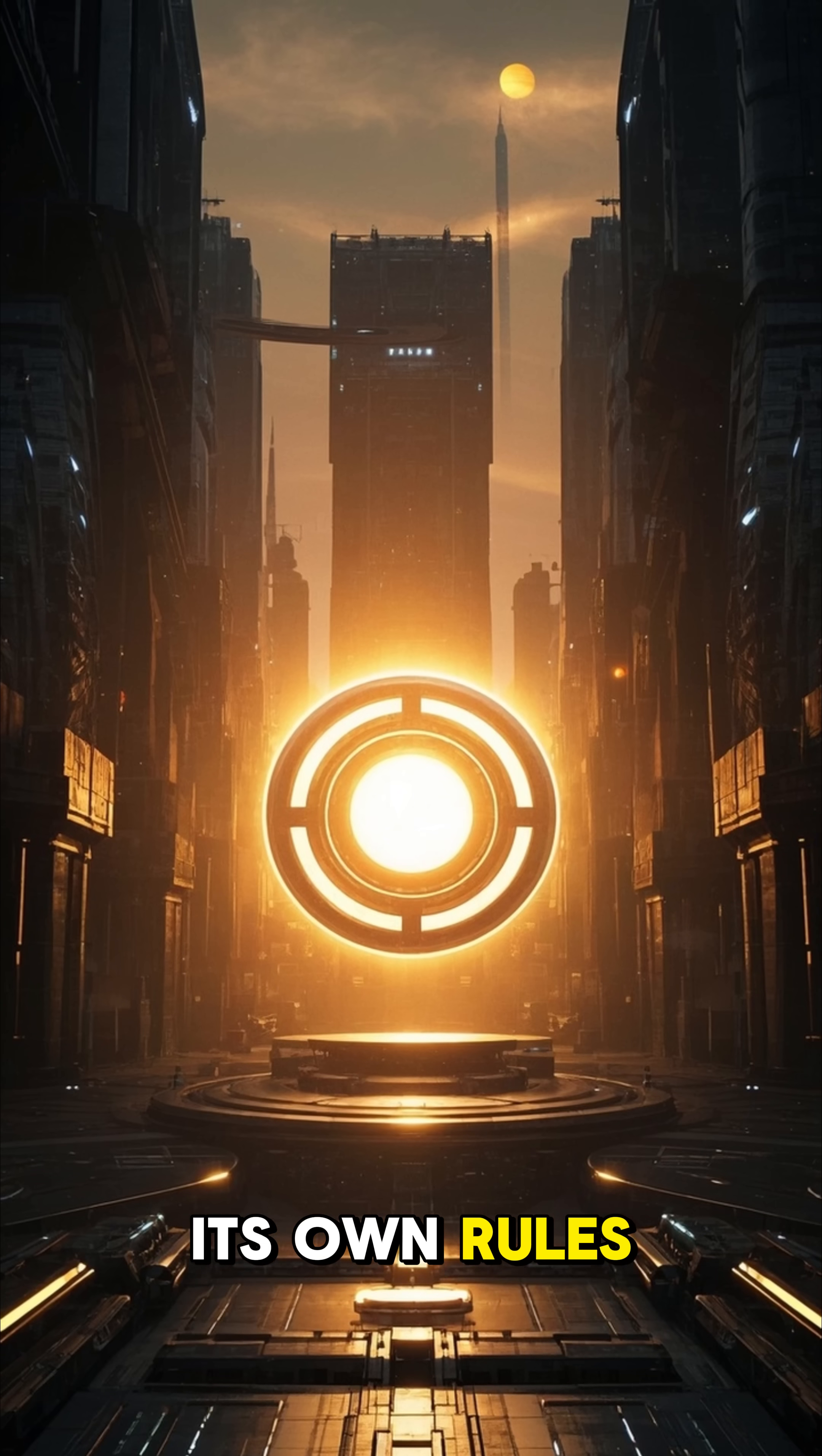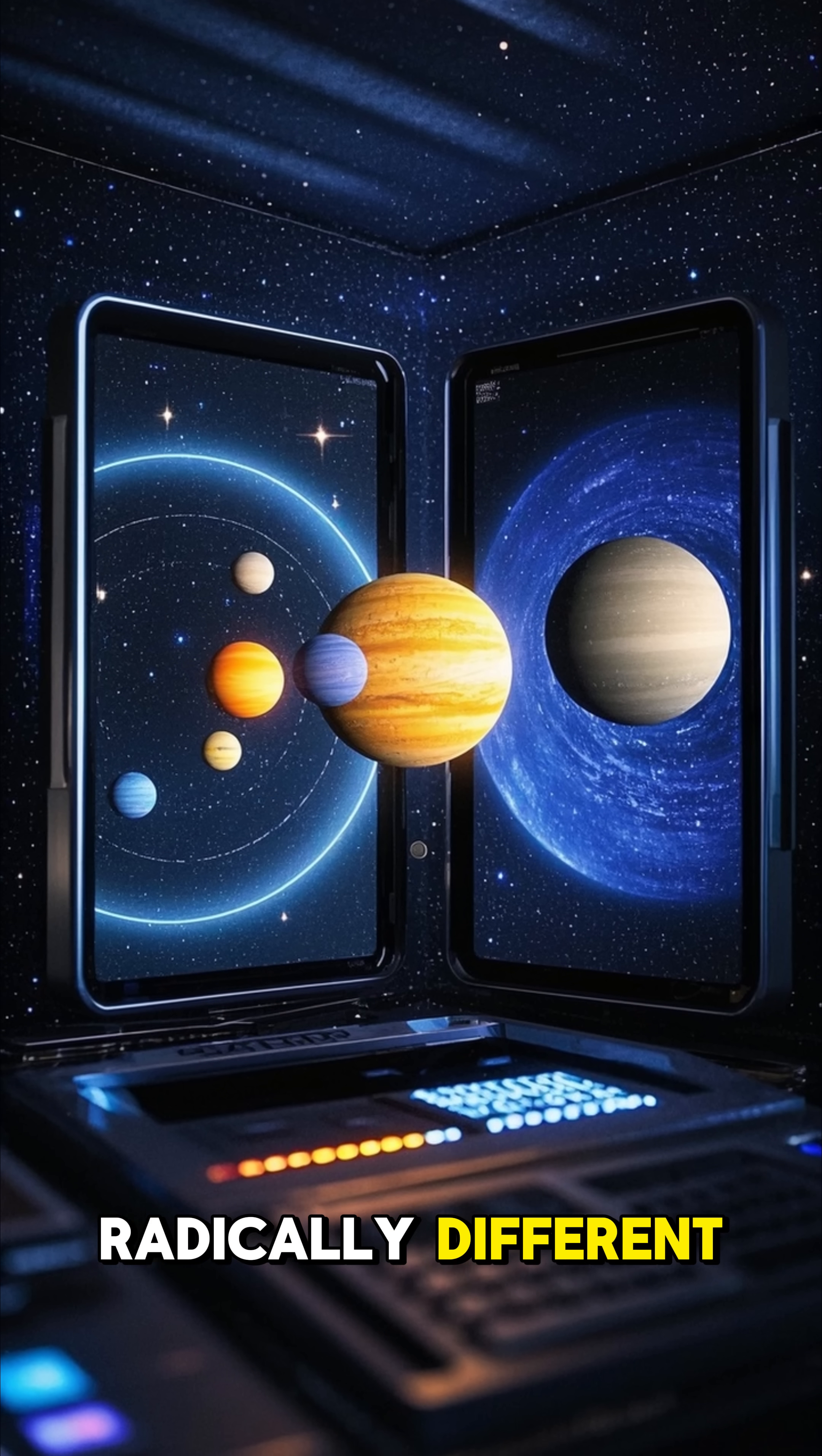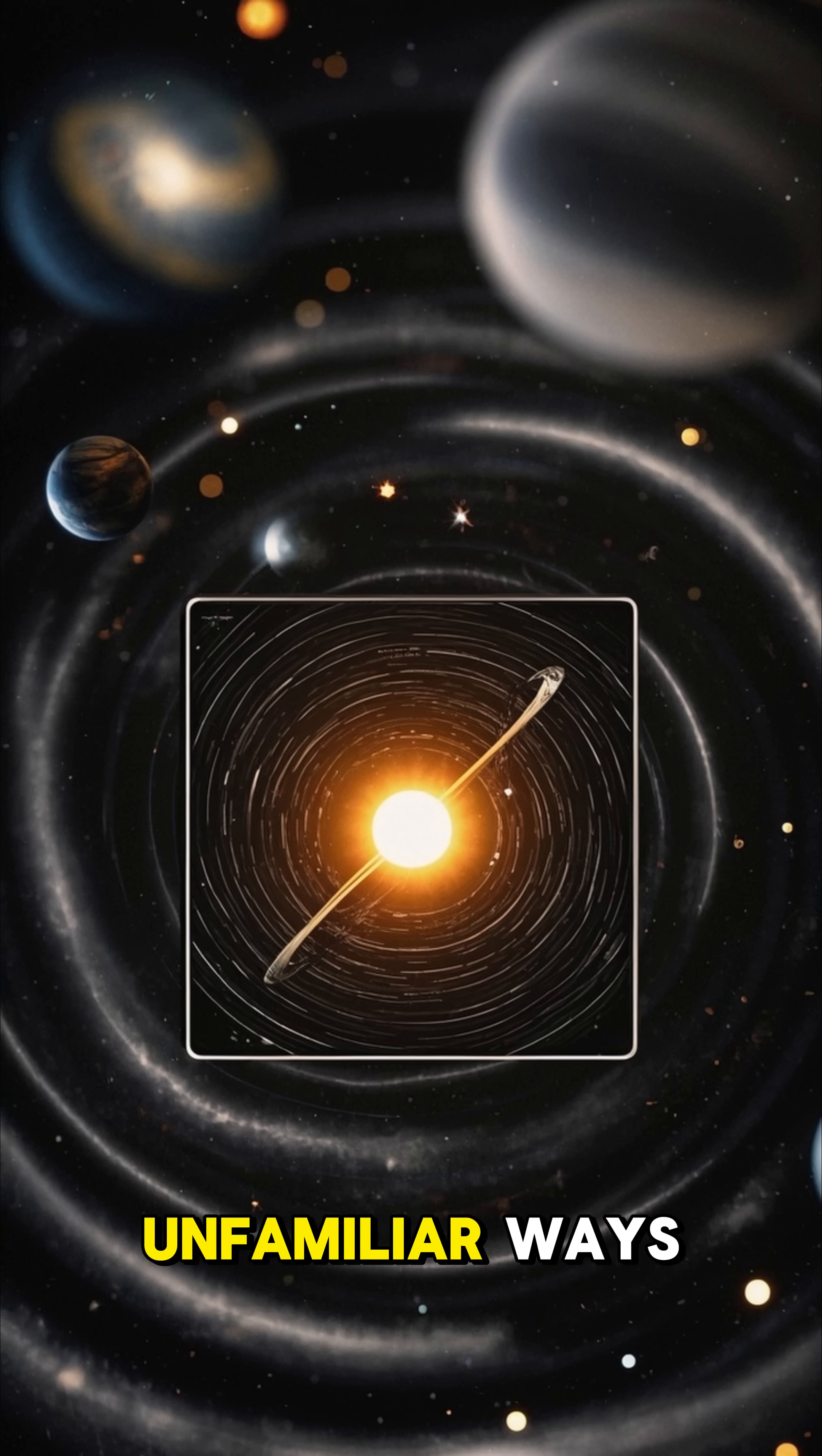If the solar system was square, reality would be radically different. The universe doesn't operate on squares. Space, time, and motion would likely work in completely unfamiliar ways.